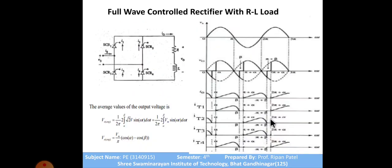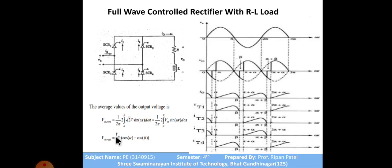When the load is RL for the bridge rectifier, SCR1 and SCR4 turn on together, and SCR2 and SCR3 turn on together as before. Due to the inductance storing energy, the output extends from alpha to pi plus alpha (denoted as beta). The average output voltage becomes V_zero = 2Vm/π × (cos α − cos β). The RMS voltage equation also changes accordingly with the limits alpha to pi plus alpha.